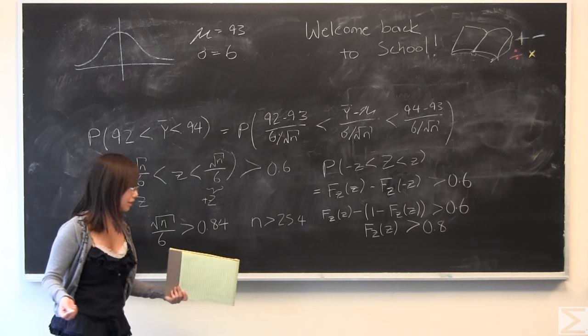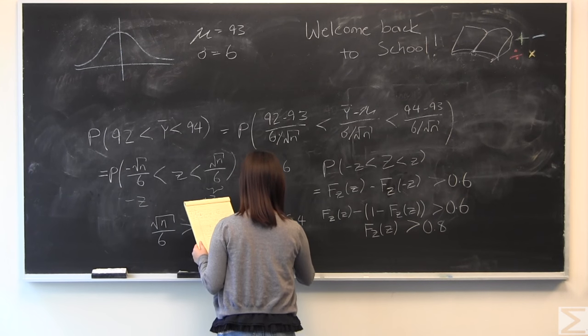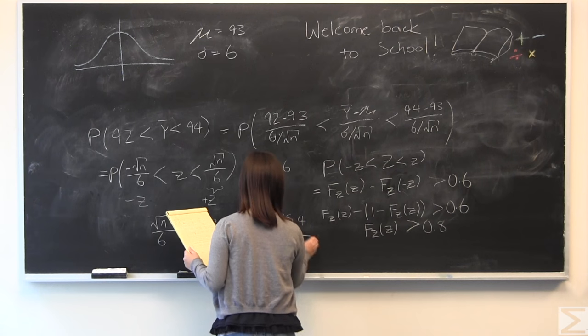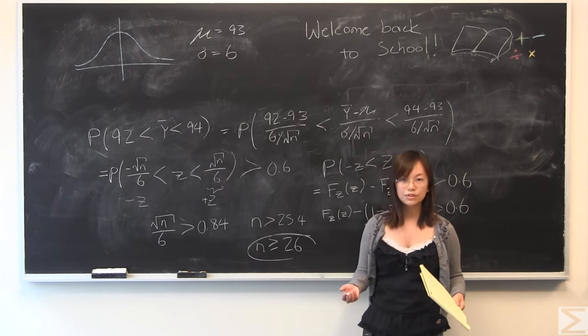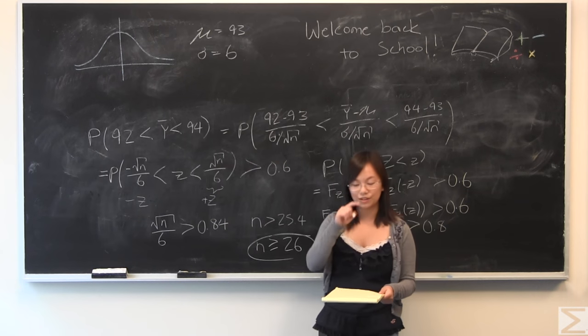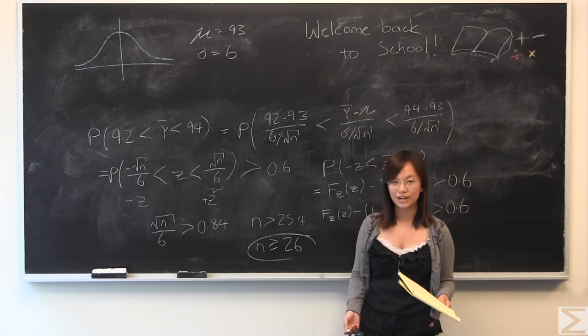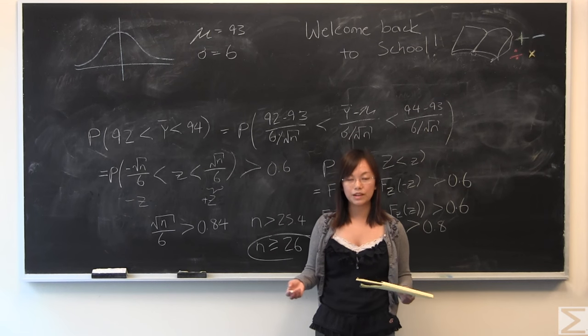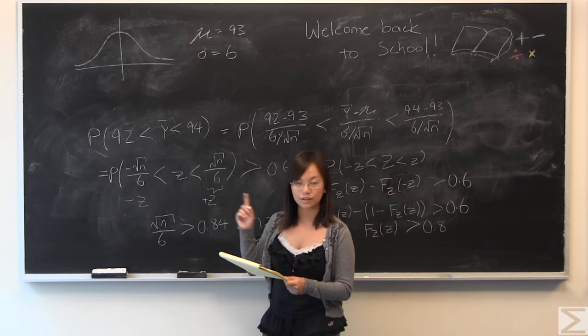We're talking about people here, so I like to round to the nearest whole number. So if you take 26 people from this population, you have a greater than 60% chance that the average is going to be between 92 and 94.